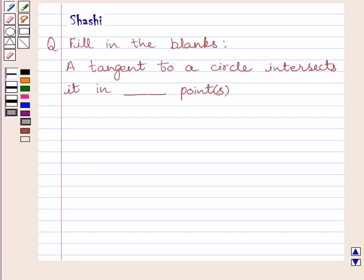Hello and welcome to the session. Let us discuss the following question. Question says, fill in the blanks. First part is, a tangent to a circle intersects it in dash points.